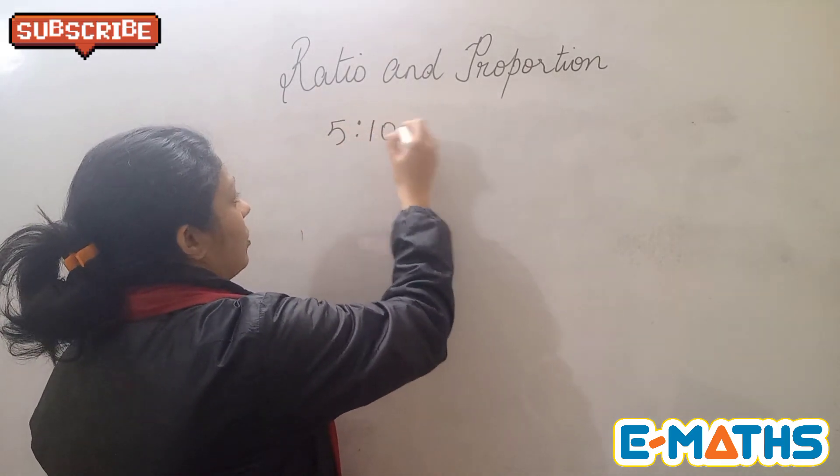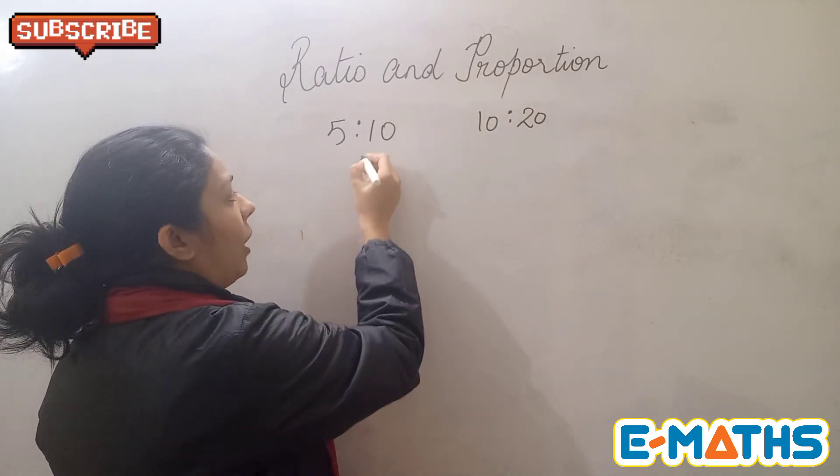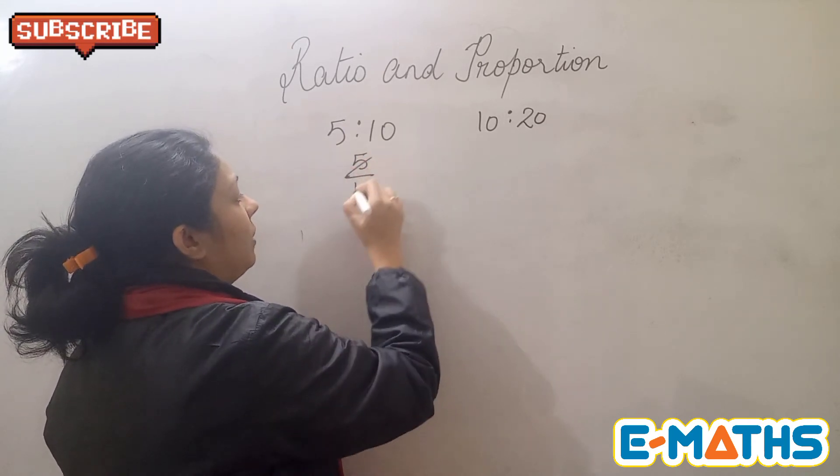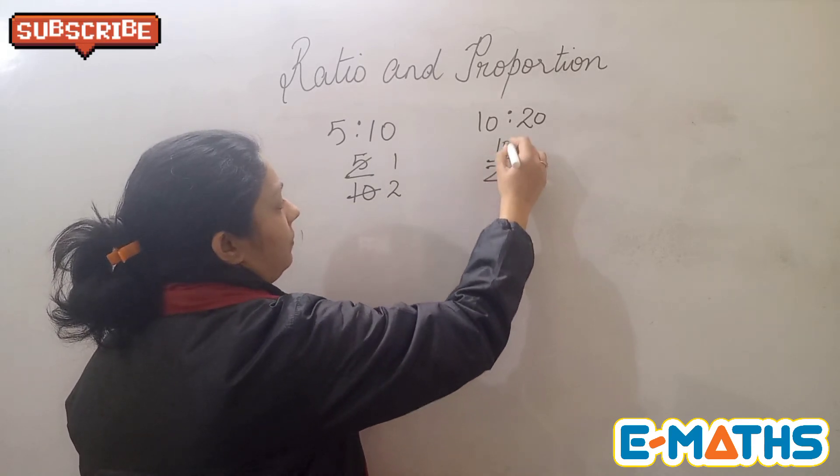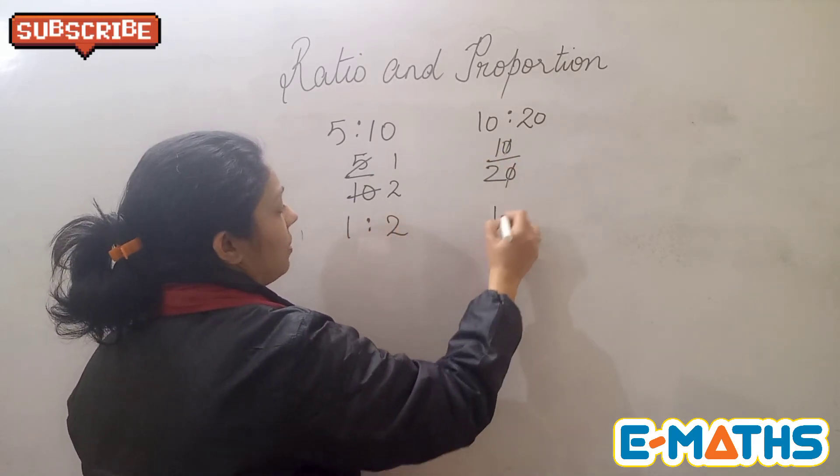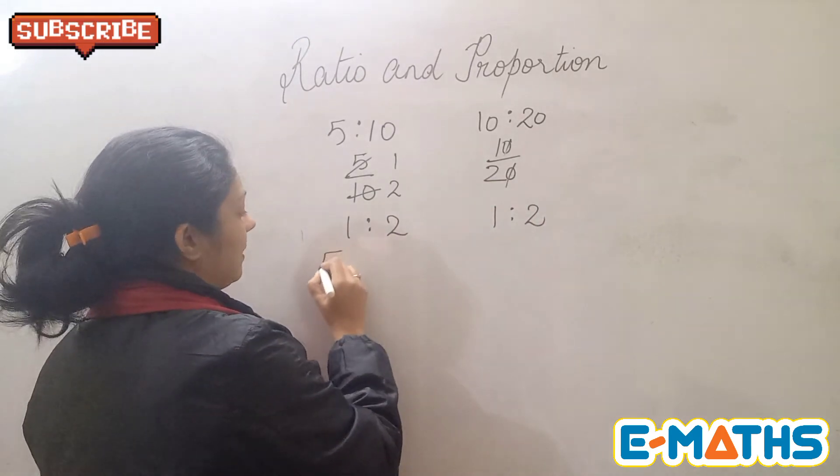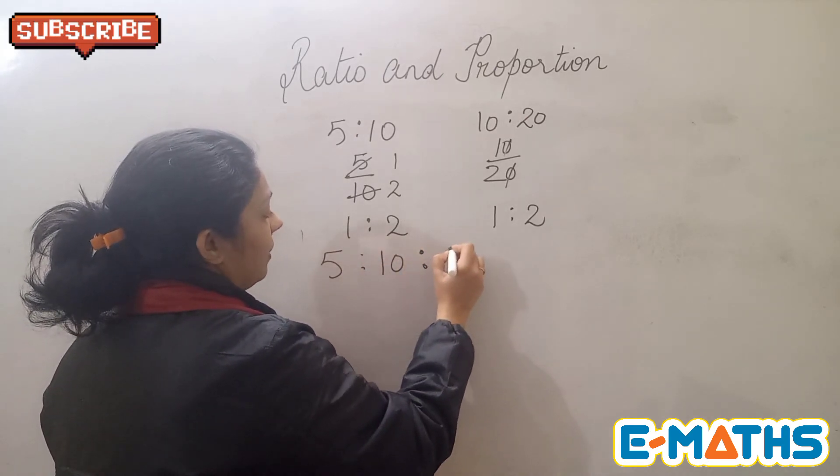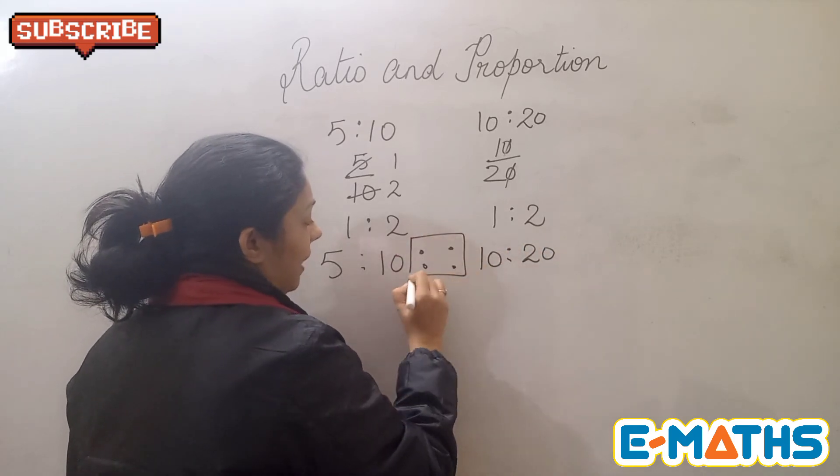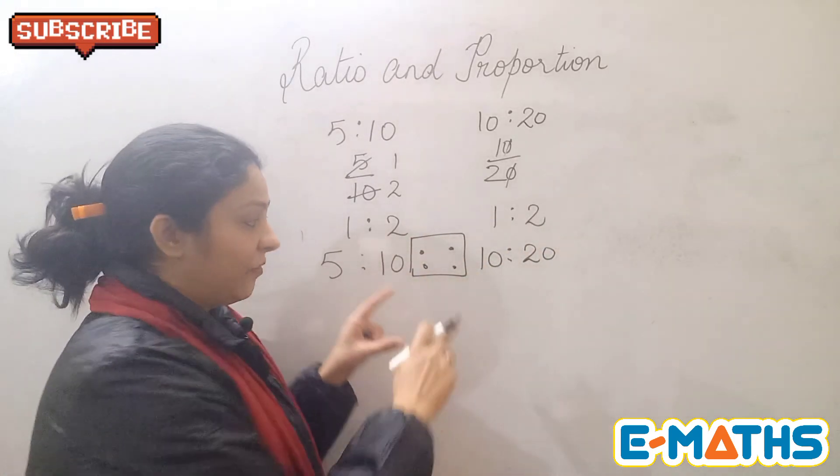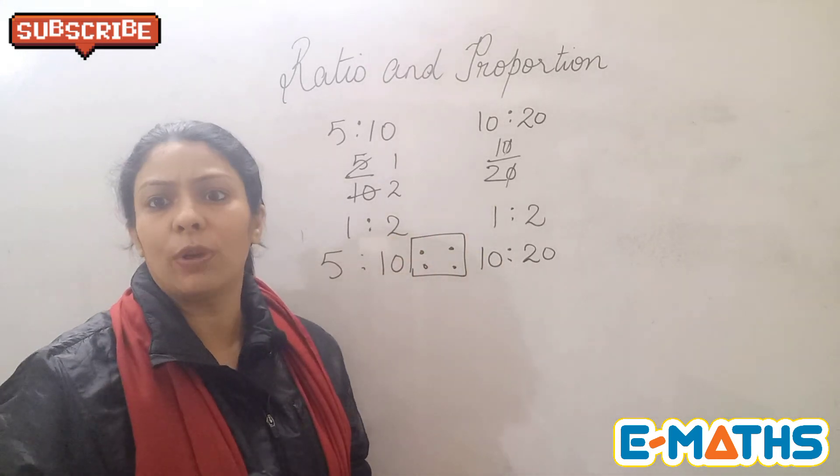For example, if I write 5 is to 10 as one ratio and the other ratio I take is 10 is to 20, now I need to find out whether they are in proportion or not. So reduce them into the lowest term. So the values that I am getting for both the ratios are equal. So lastly I can say that these two ratios 5 is to 10 and 10 is to 20 are in proportion. This is the sign of proportionality. With this sign I can say that these two ratios are in proportion.